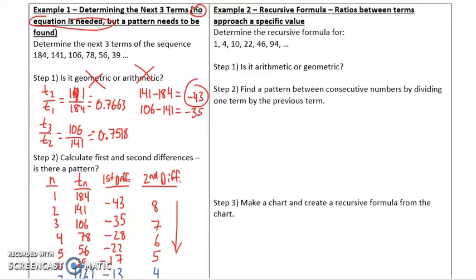Let's look at example 2. Now, we need a recursive formula, not just determining the next three terms. What I do here is I always start by seeing if it's arithmetic or geometric. So, 1, 4, 10, 22, 46, 94. It's pretty clear that it's neither, but let's actually do that so we can show it. If I go 4 minus 1, well, that's equal to 3. And if I go 10 minus 4, well, that's equal to 6. It's clearly not arithmetic.